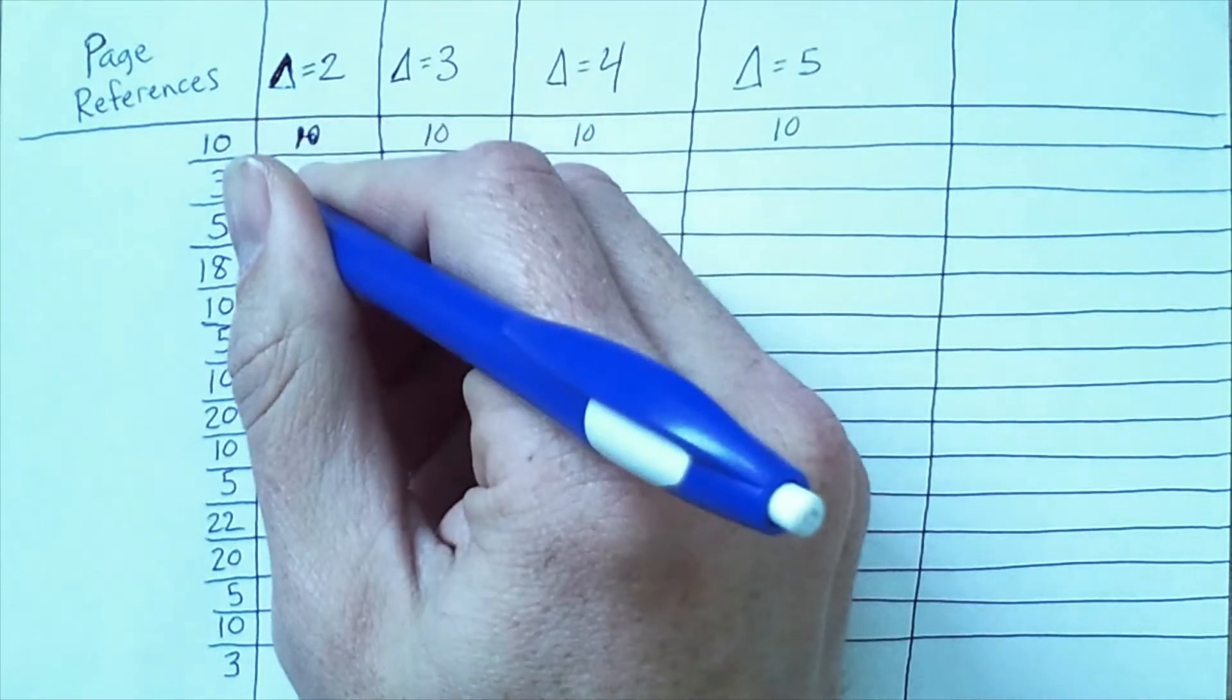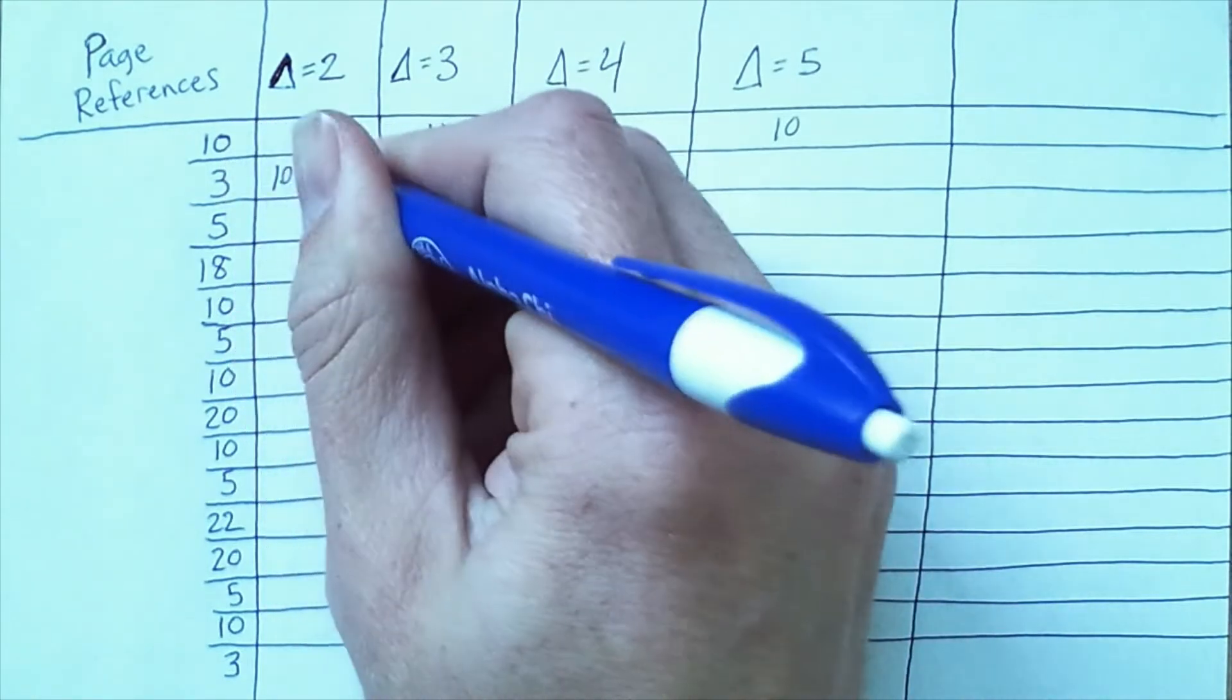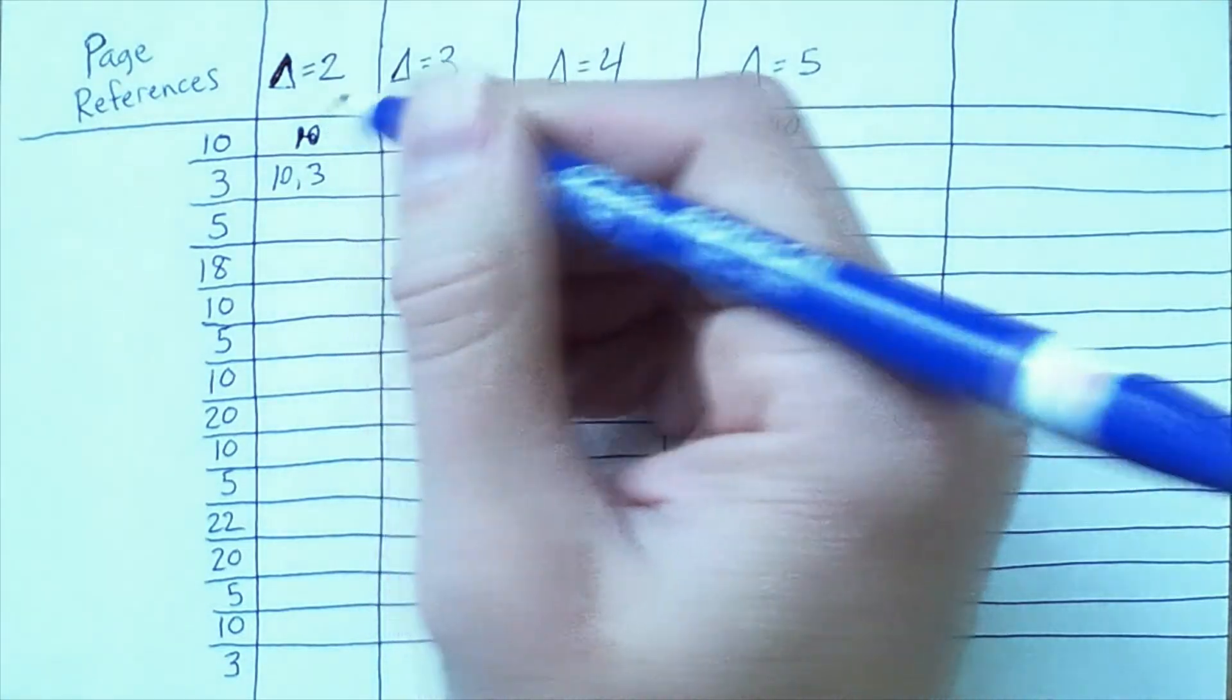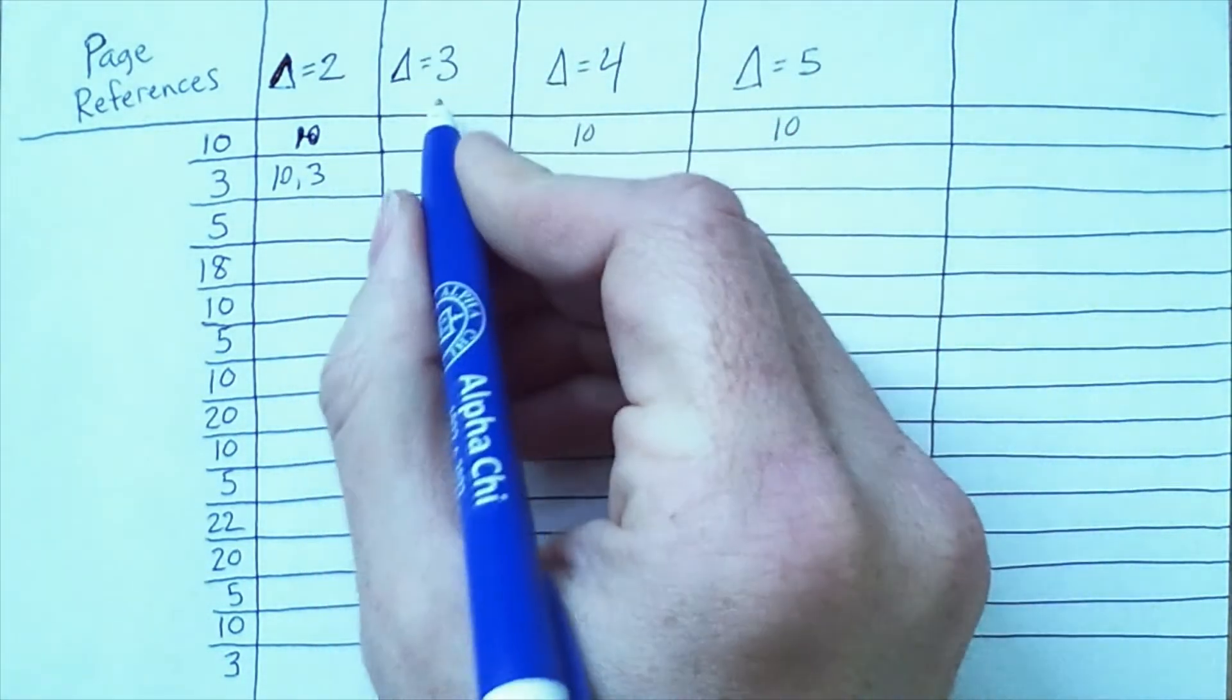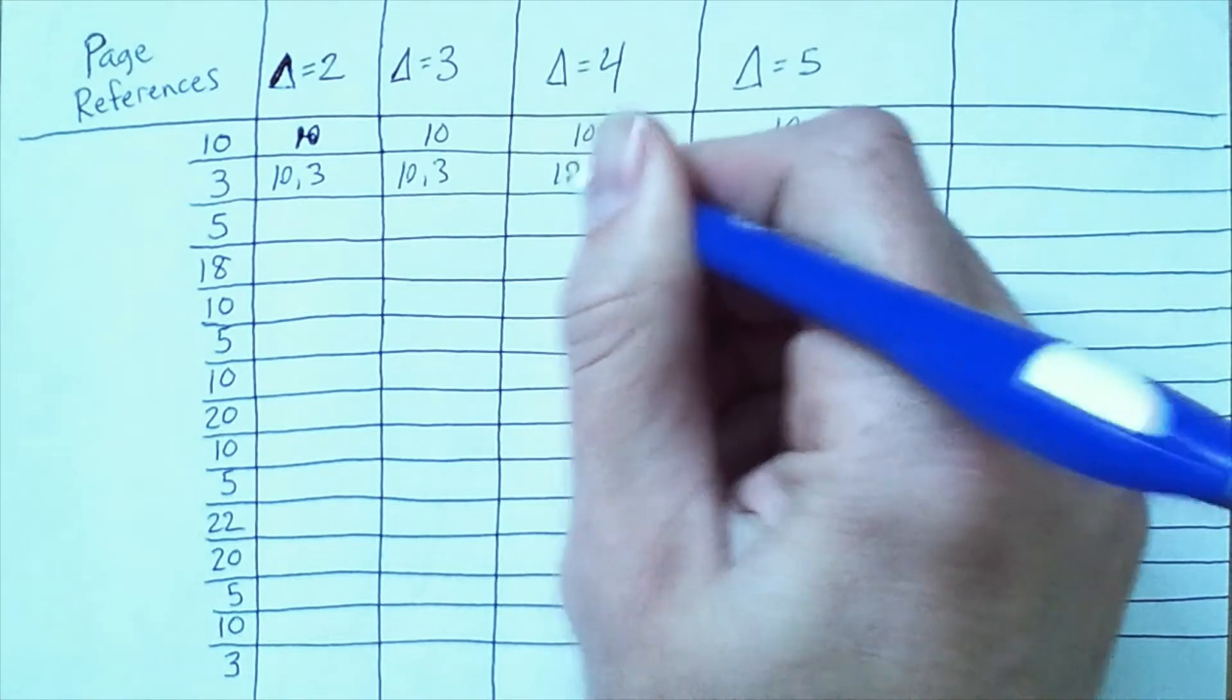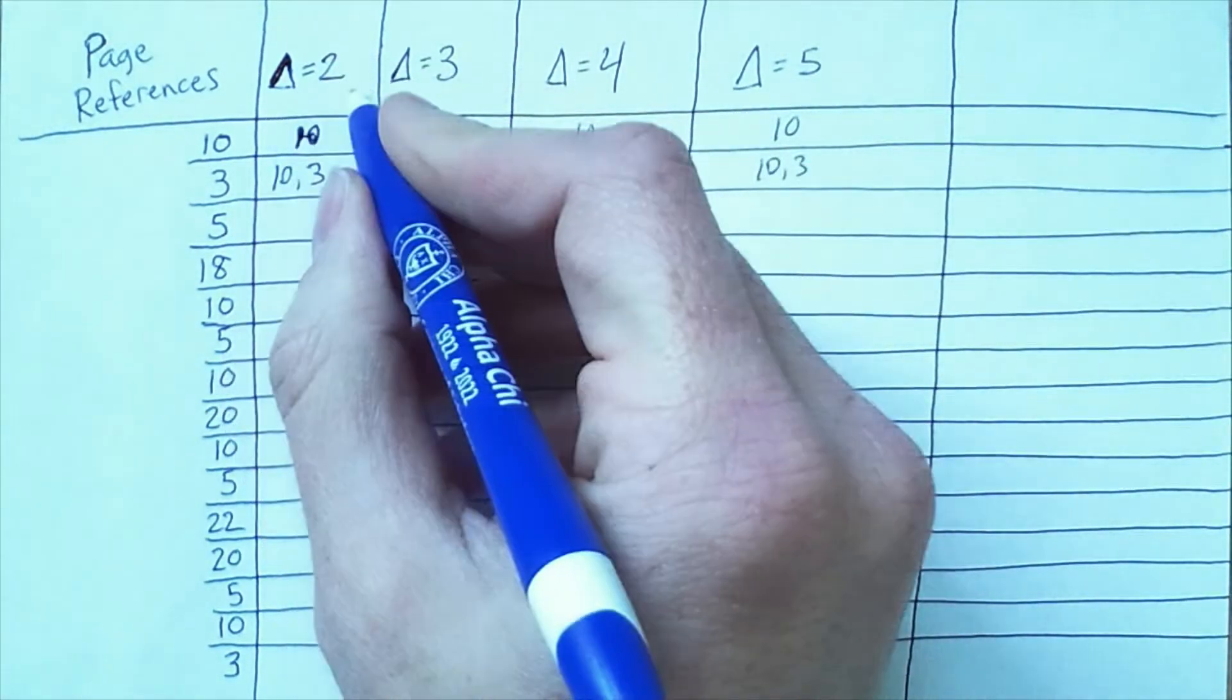So we can have a larger set when delta is larger, although the size of the working set could sometimes be smaller than delta if, for example, we have referenced the same page repeatedly within the last few time steps. So let's go through this bit by bit.